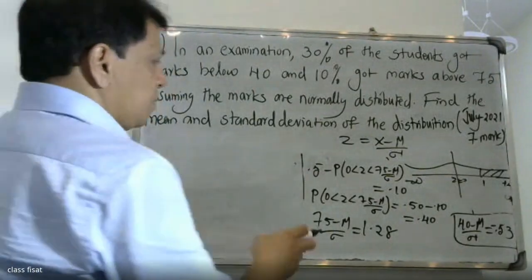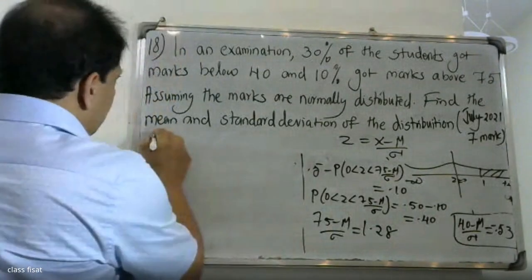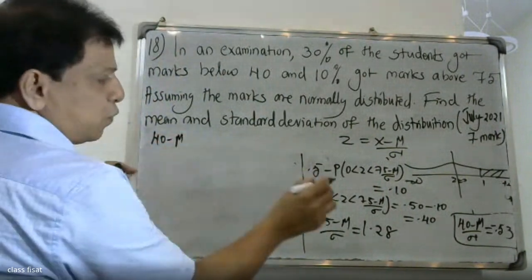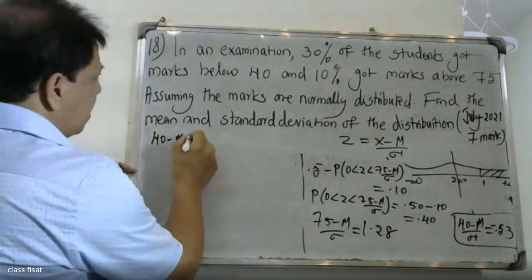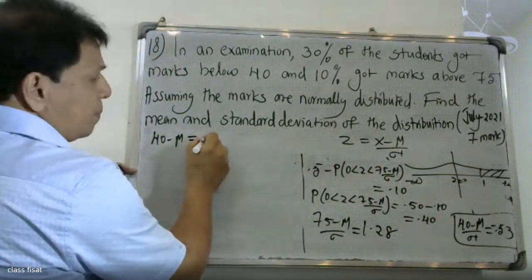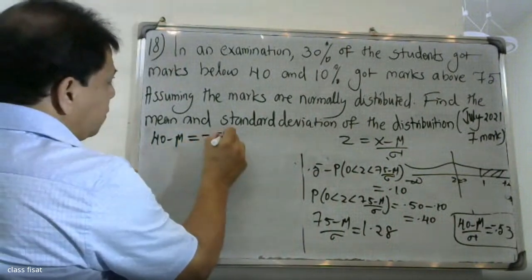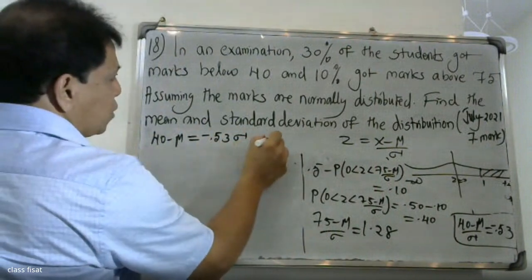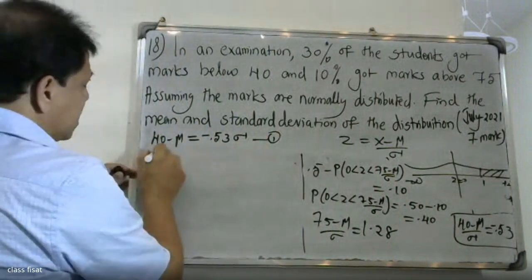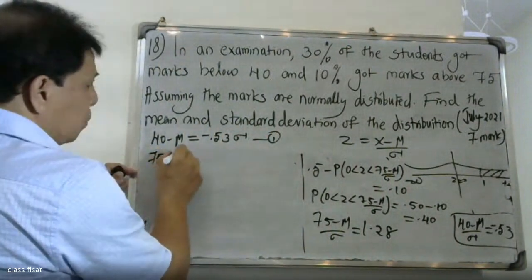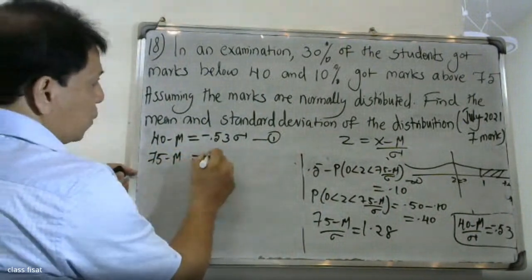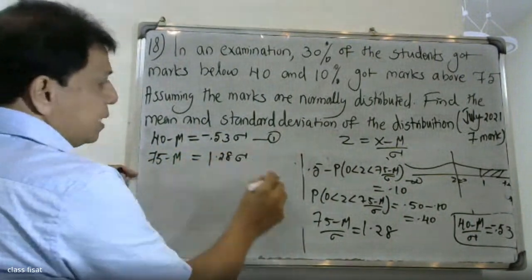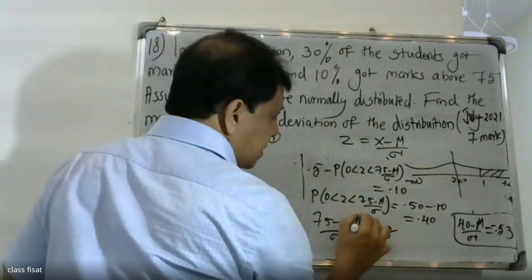The first equation is: 40 minus mu by sigma equals minus 0.53, which gives us equation 1. The second equation is: 75 minus mu by sigma equals 1.28, which gives us equation 2.